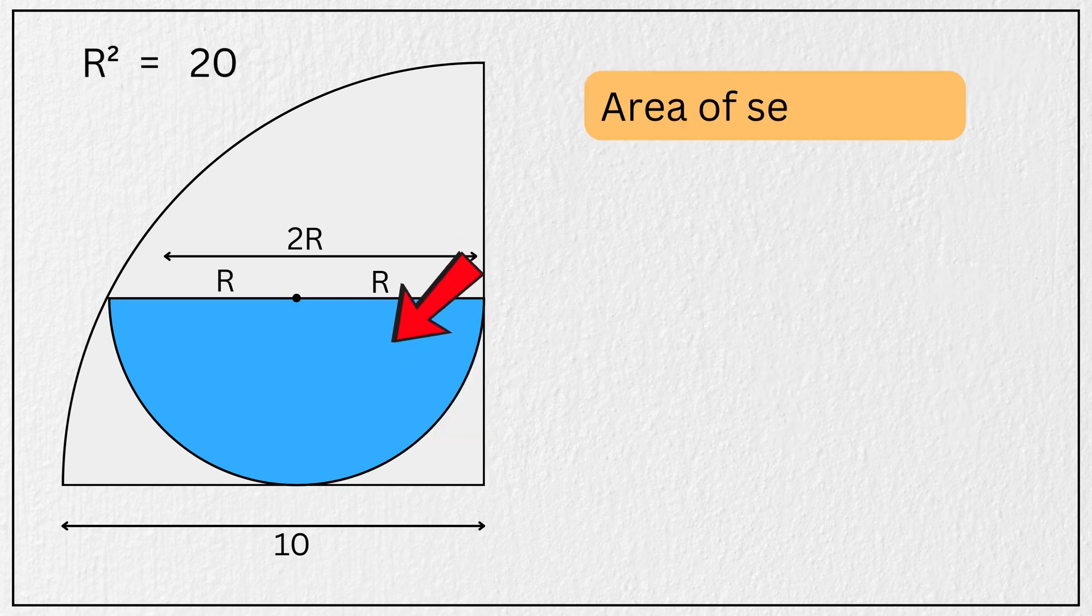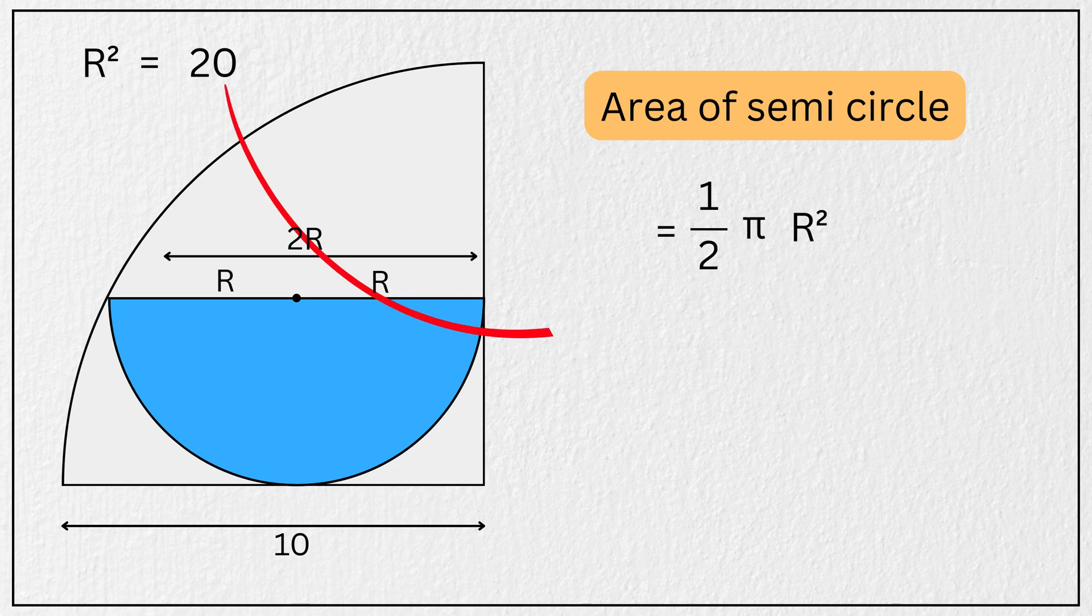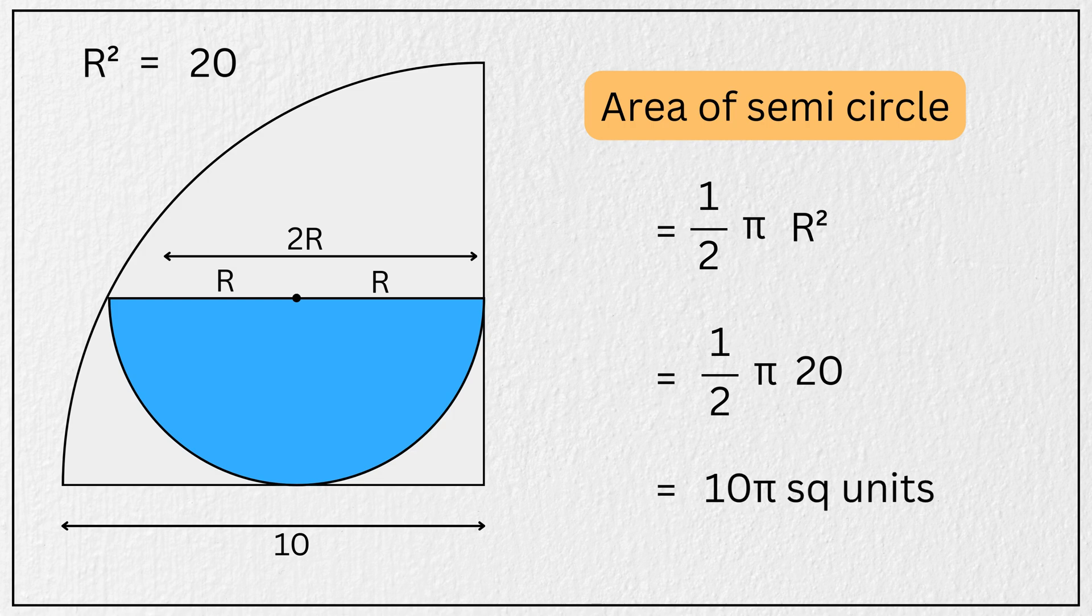Finally, finding the area of this blue shaded semicircle will be super easy. It will be equal to 1 half times Pi times the radius squared. So substituting r squared equal to 20, the area becomes 1 half times Pi times 20, which simplifies to 10 Pi square units. And that is our final answer.